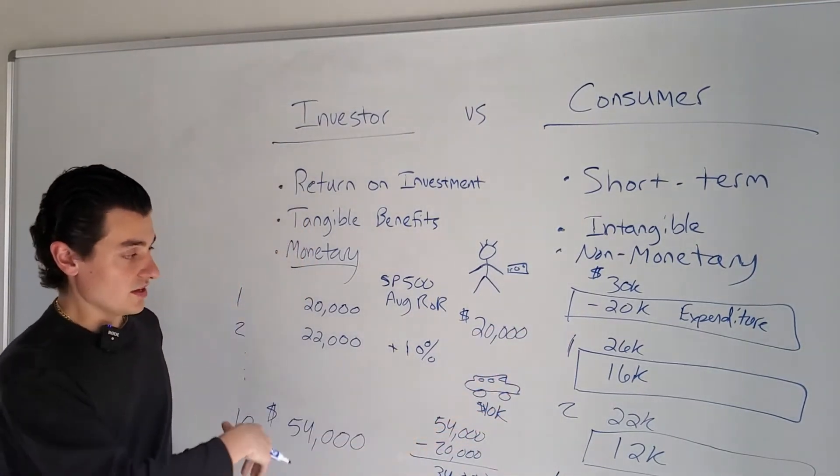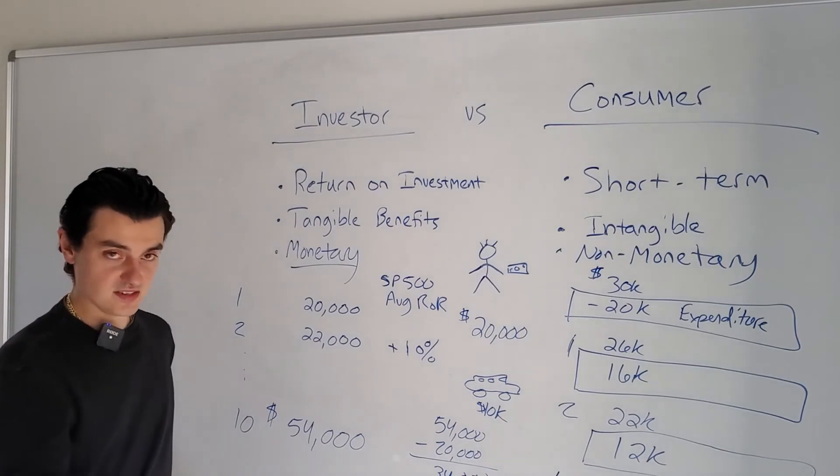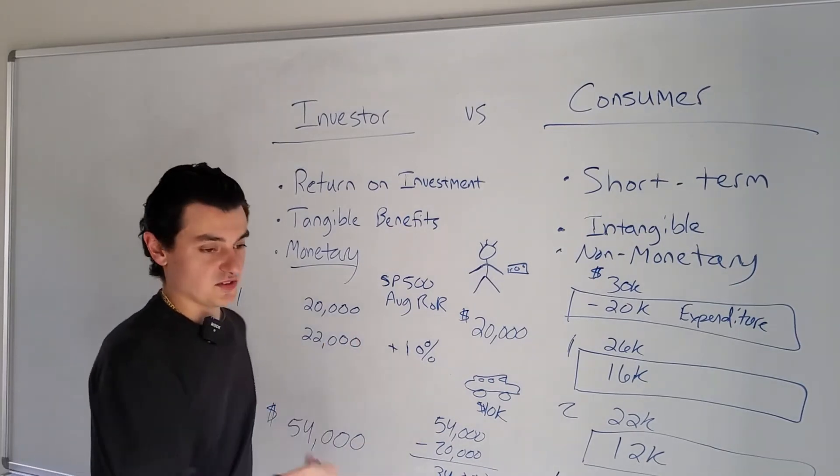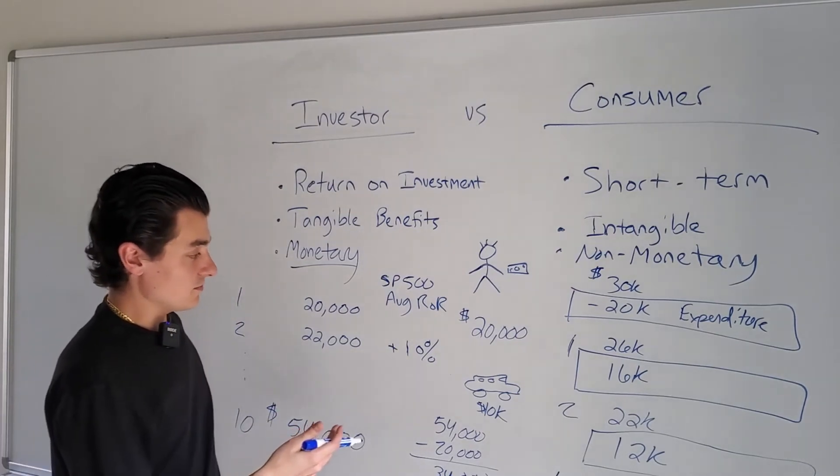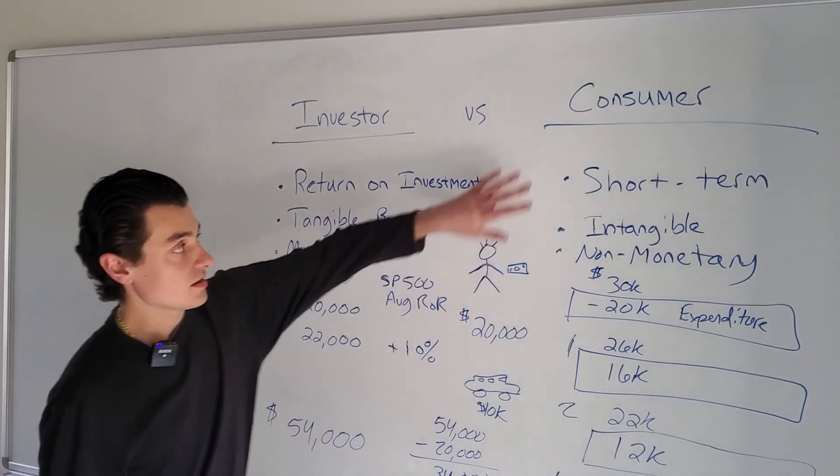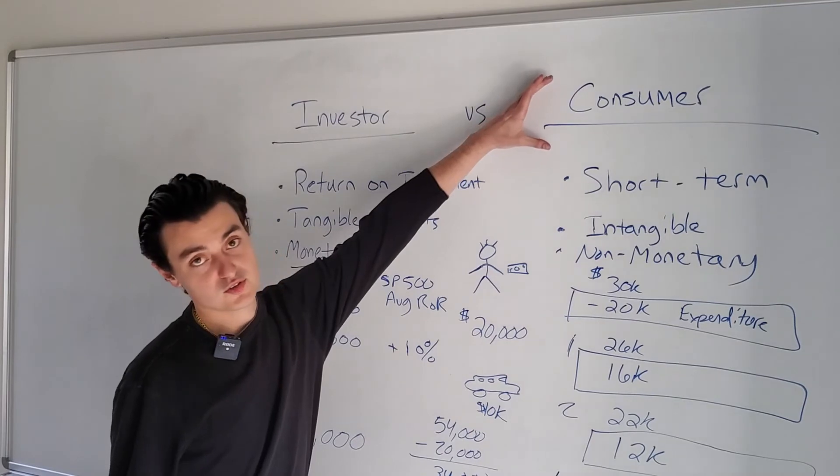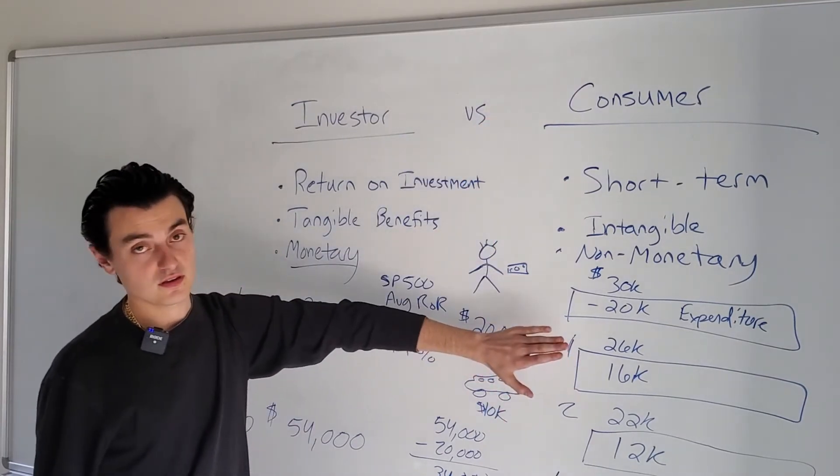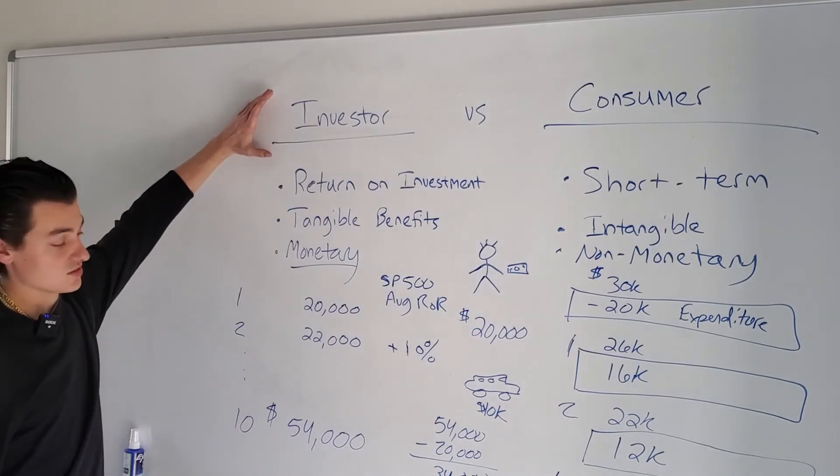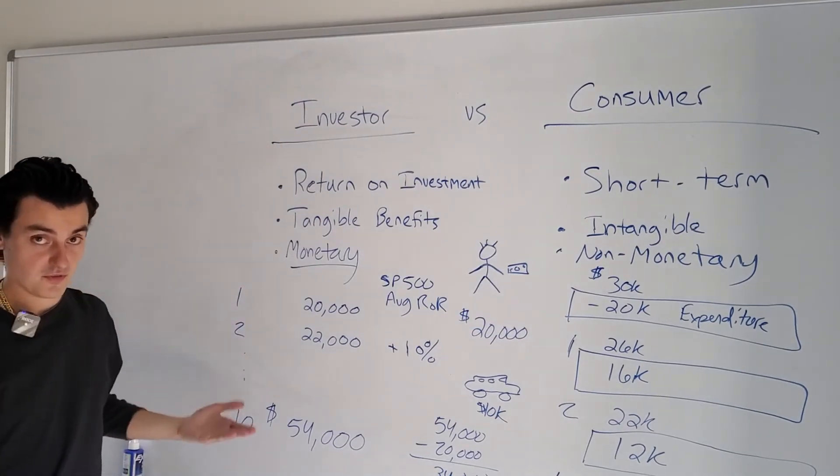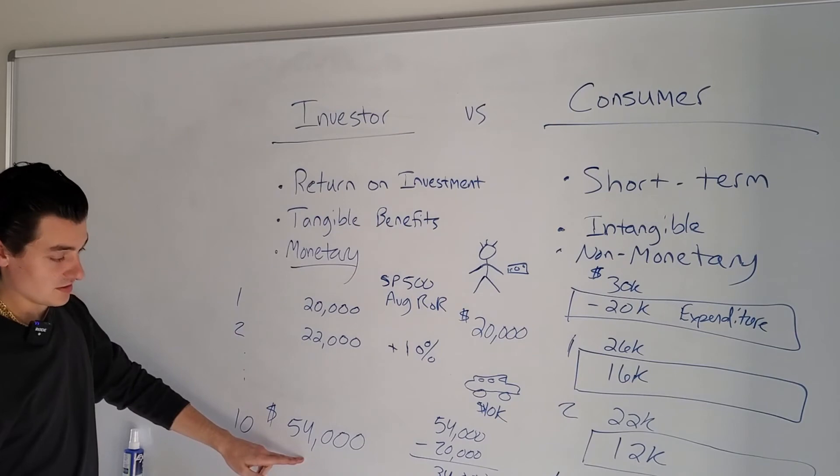You could use this example for anything. It could be yearly trips to Disney World. It can be an expensive clothing habit or cigarettes. The opportunity cost of being a pure-blooded consumer of things that you don't need is tremendous compared to what the investor does.